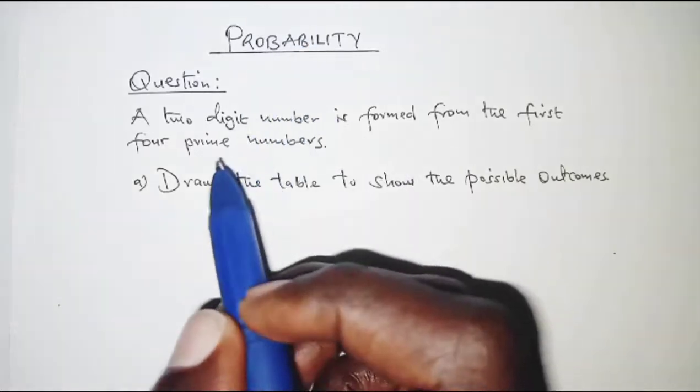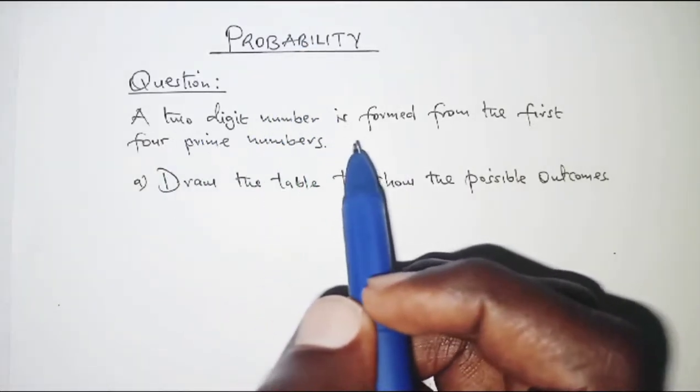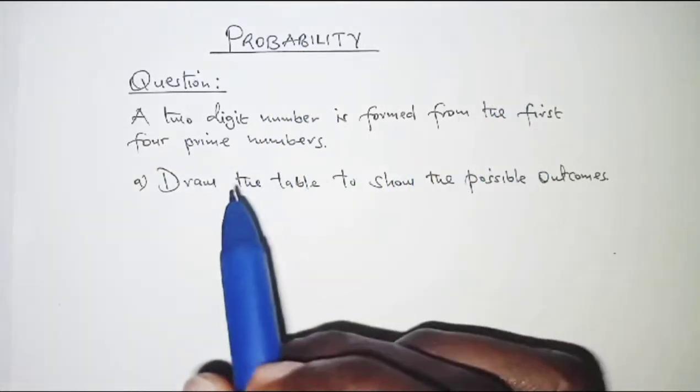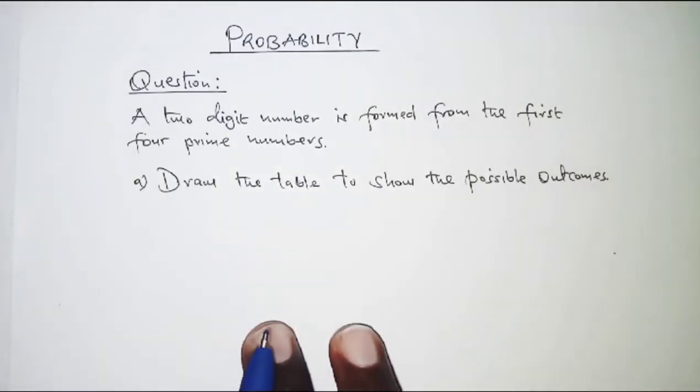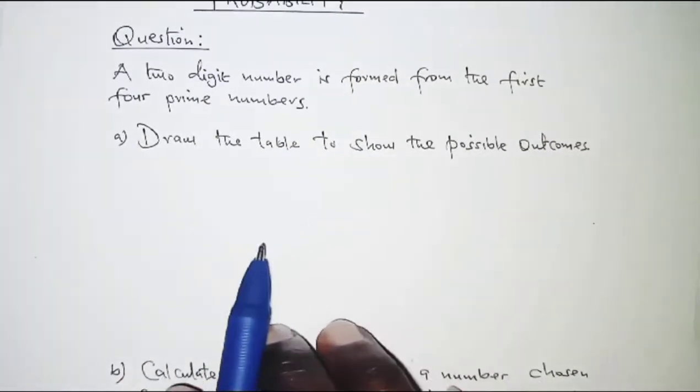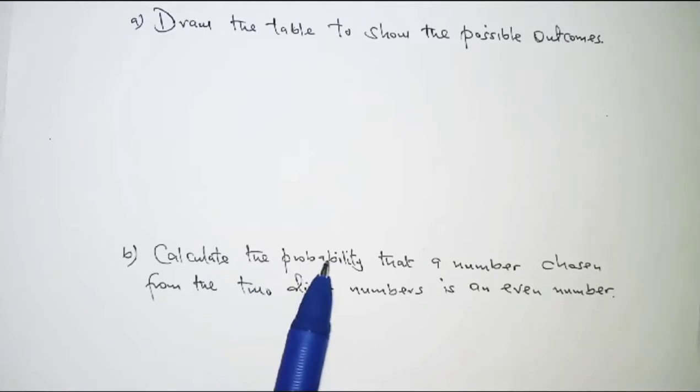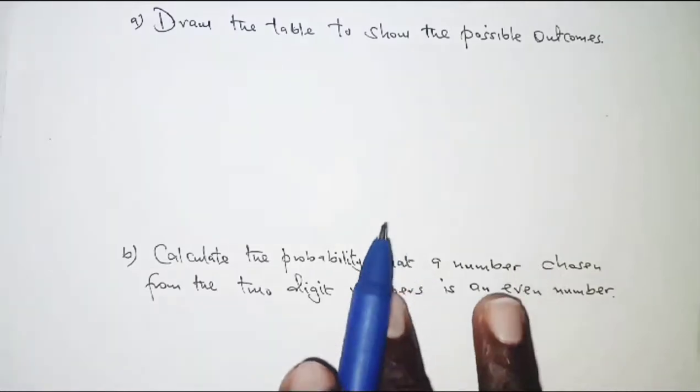So the question here is on probability and it reads: a two-digit number is formed from the first four prime numbers. Draw the table to show the possible outcomes and then calculate the probability that a number chosen from the two-digit numbers is an even number.